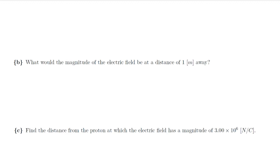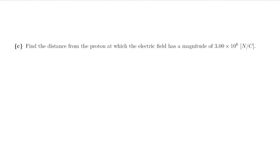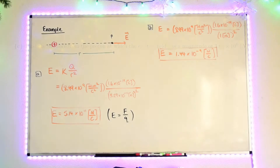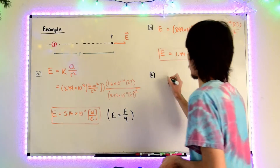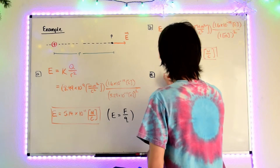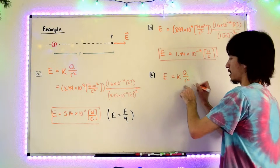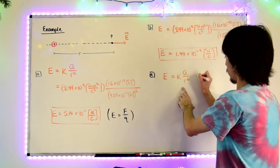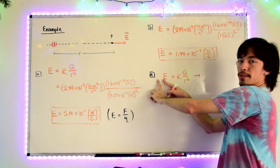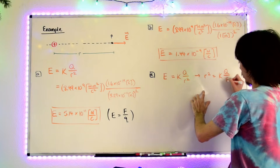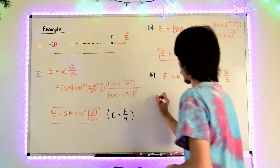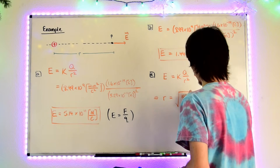Now let's also find the distance from the proton at which the electric field has a magnitude of 3 times 10 to the 6th newtons per coulomb. We're going to find the location that corresponds to that magnitude of electric field using the same equation, but solving for the distance. Taking E equals kQ over R squared and solving for R: multiply R squared to the left side and divide E to the bottom, so R squared equals kQ over E. Then square root both sides to isolate R, giving us R equals the square root of kQ over E.